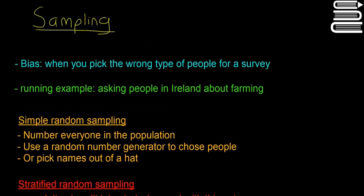This is going to be our last video on the theory behind some of the statistics, and then we're going to get stuck into the maths. So we're going to talk about sampling here today. Whenever you're doing a survey, there's always the danger that the results you get are going to be biased. Bias happens when you pick the wrong type of people for the survey. The running example we're going to use is asking people in Ireland about farming.